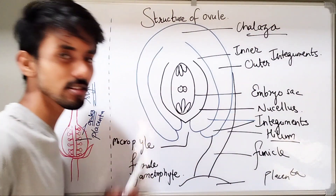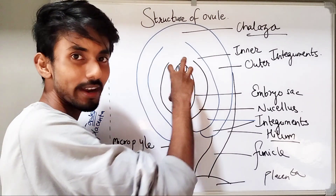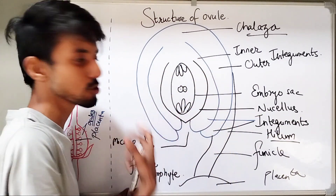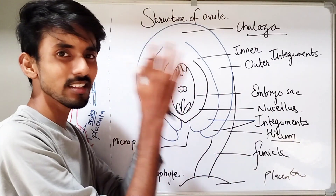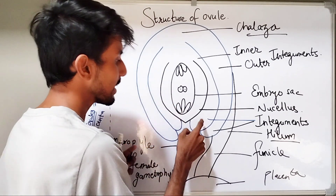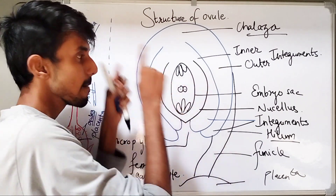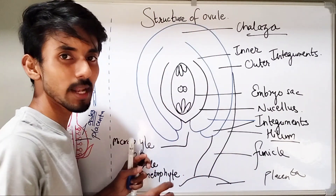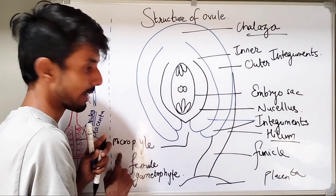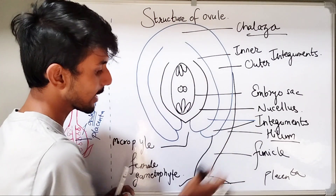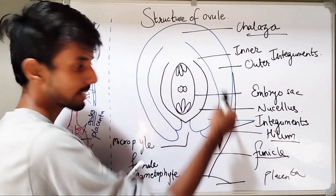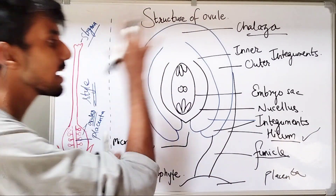Let us summarize all these parts again. Firstly, we have the female gametophyte which is going to produce the gamete — this is called as the embryo sac. Surrounding the embryo sac, there is a layer of nutritive tissue called as the nucellus. The nucellus and the embryo sac both are protected by protective layers called as the integuments — outer integument and inner integument. Both these integuments cover the nucellus and embryo but they do not cover at one region which is called as the micropyle. The ovule is connected to the placenta by a stalk-like structure called as the funicle, and the area where the funicle and the ovule are connected is called as the hilum.